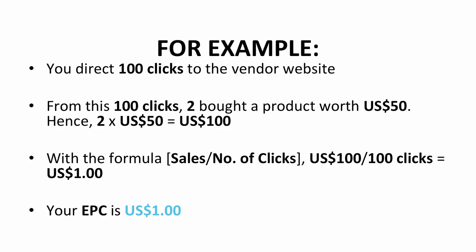Picture this scenario. Let's say you're able to direct 100 clicks to the vendor website through your affiliate link. From these 100 clicks, two of them made purchases of a product worth $50. So $50 times 2 equals $100 — that's your sales. Using the EPC formula, sales divided by number of clicks: $100 divided by 100 clicks. The answer — the EPC — is $1.